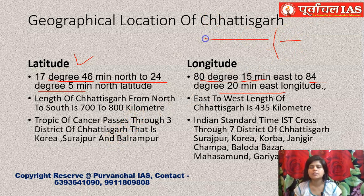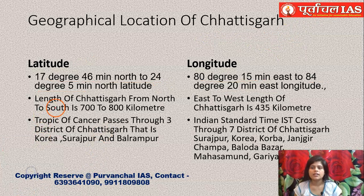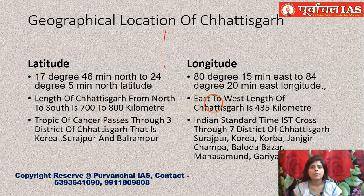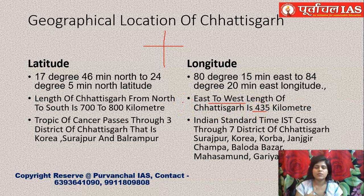Please remember the important dimensions of Chhattisgarh. The length from north to south is 700 to 800 kilometers, while the length from east to west is just 435 kilometers. That means the north-south extent is considerably more than the east-west extent. This has been asked in examinations quite a few times.